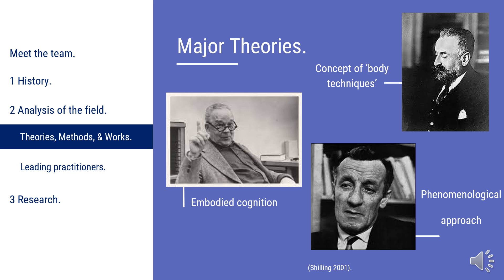There are three main theories found in embodiment. First, the theory of embodied cognition created by J.J. Gibson — an American psychologist pictured on the left. Embodied cognition theory states that the mind is influenced by and influences the body, stressing the importance of the body's role in cognition and development. The second theory is the concept of body techniques by Marcel Mauss, pictured on the right, a French sociologist. He defines body techniques as any learned bodily action that reflects culture or reinforces it. In short, culture is embedded into a physical motion.